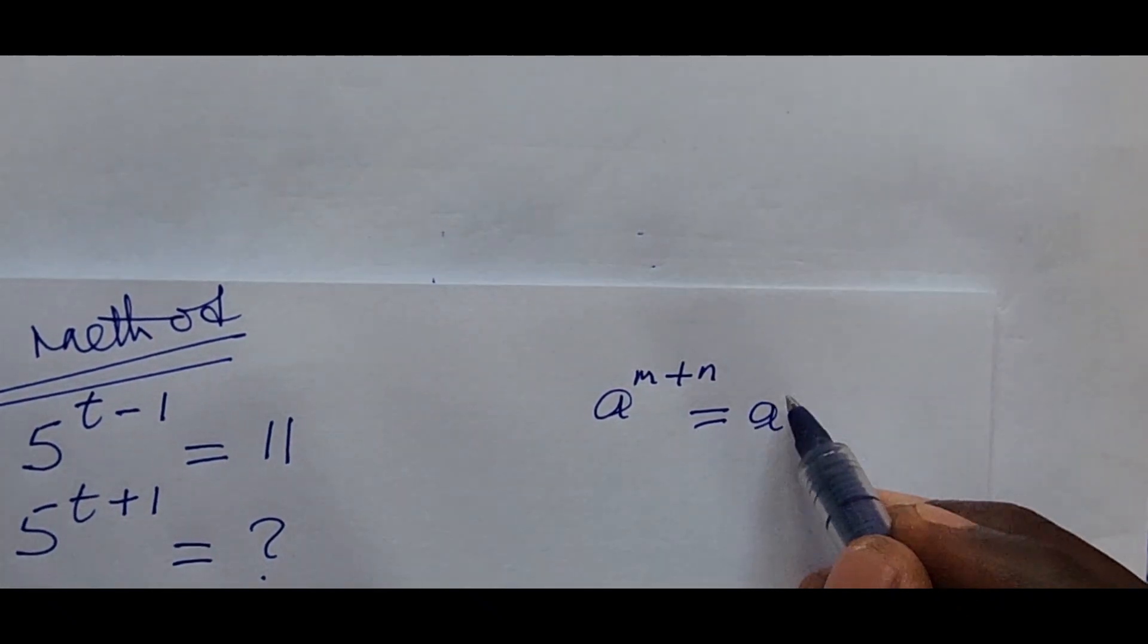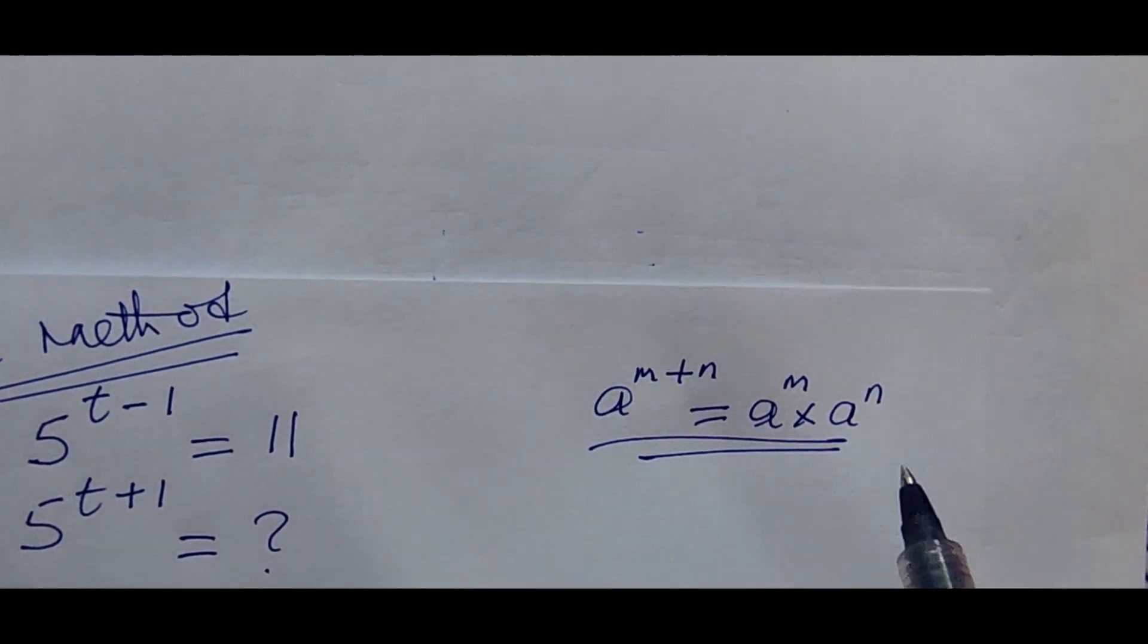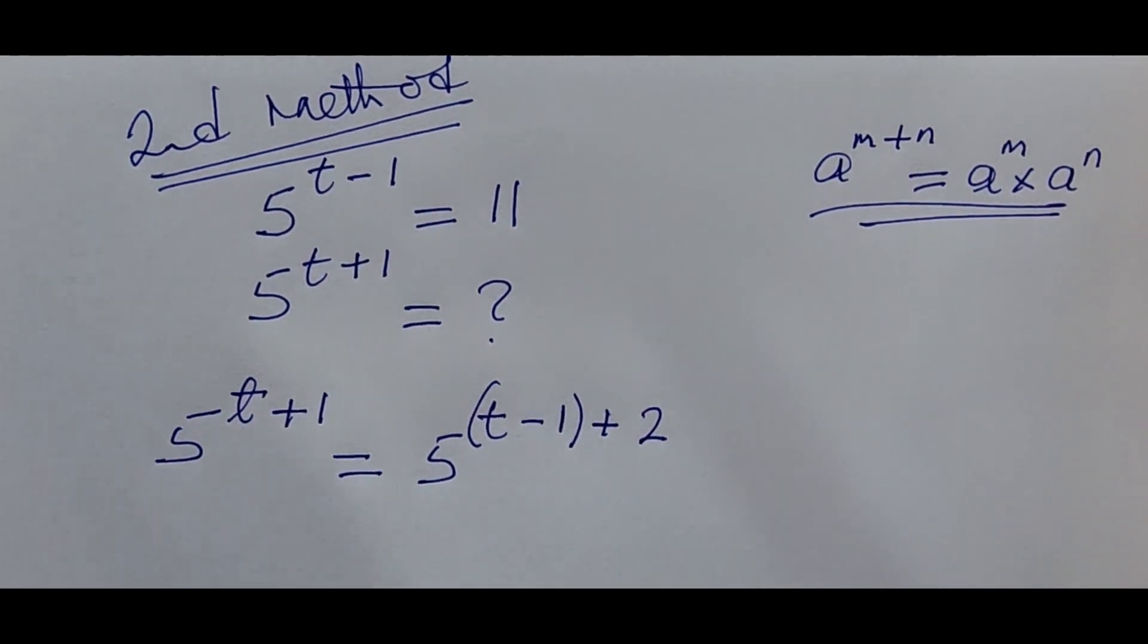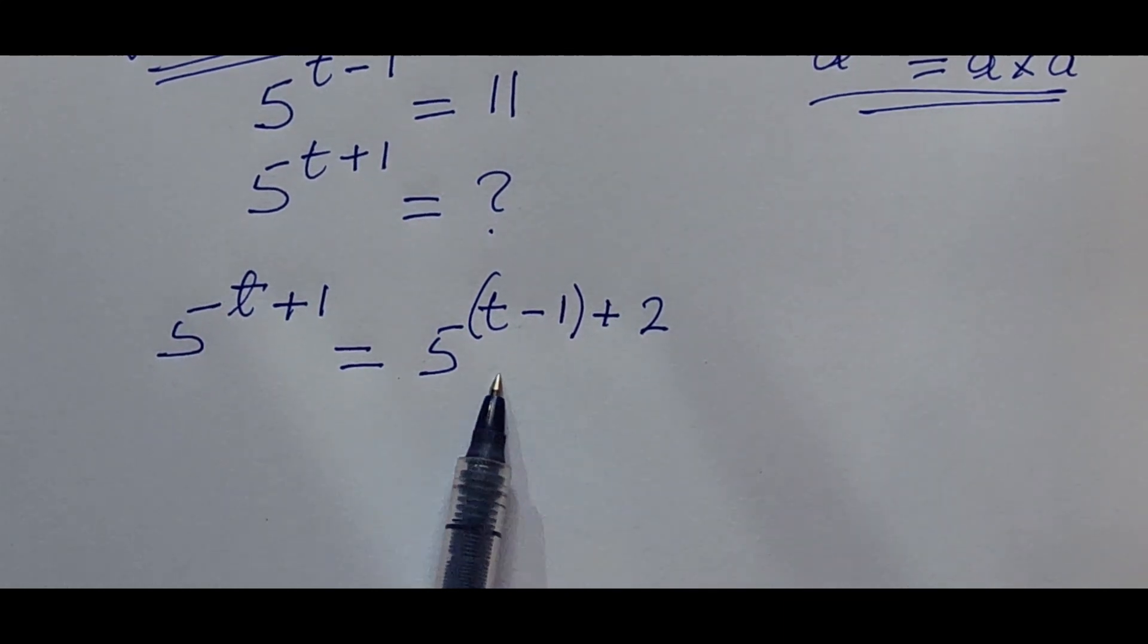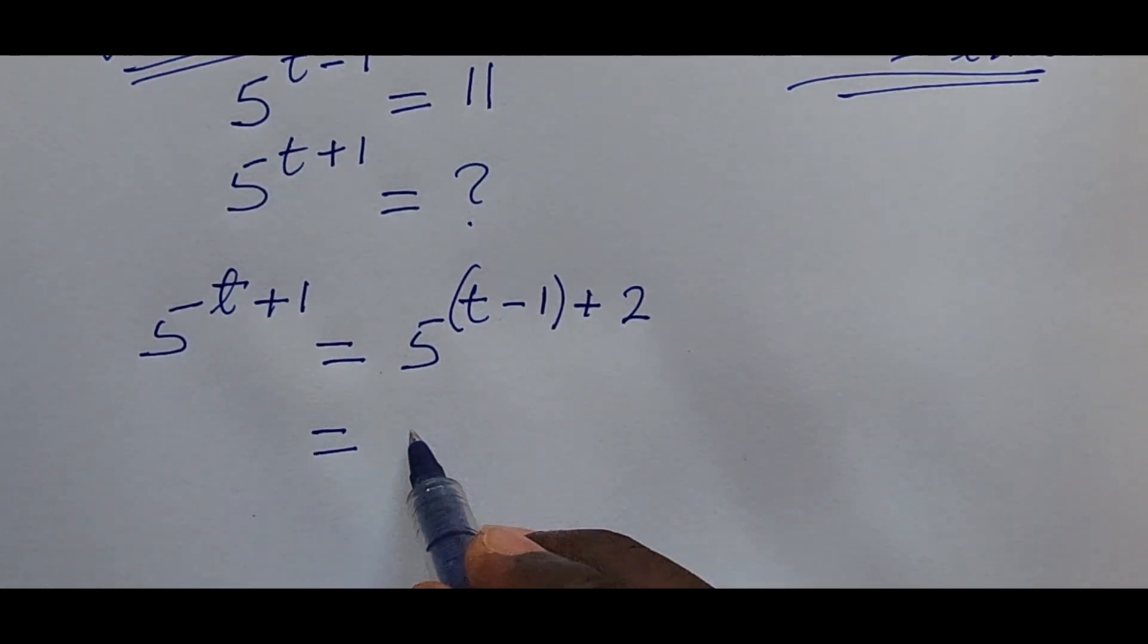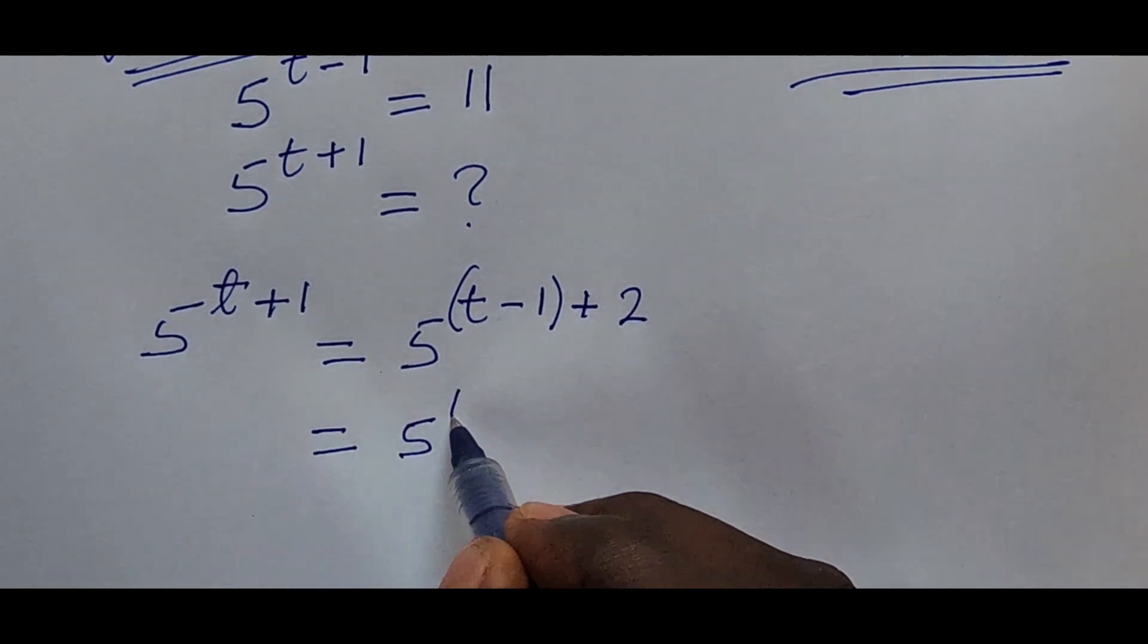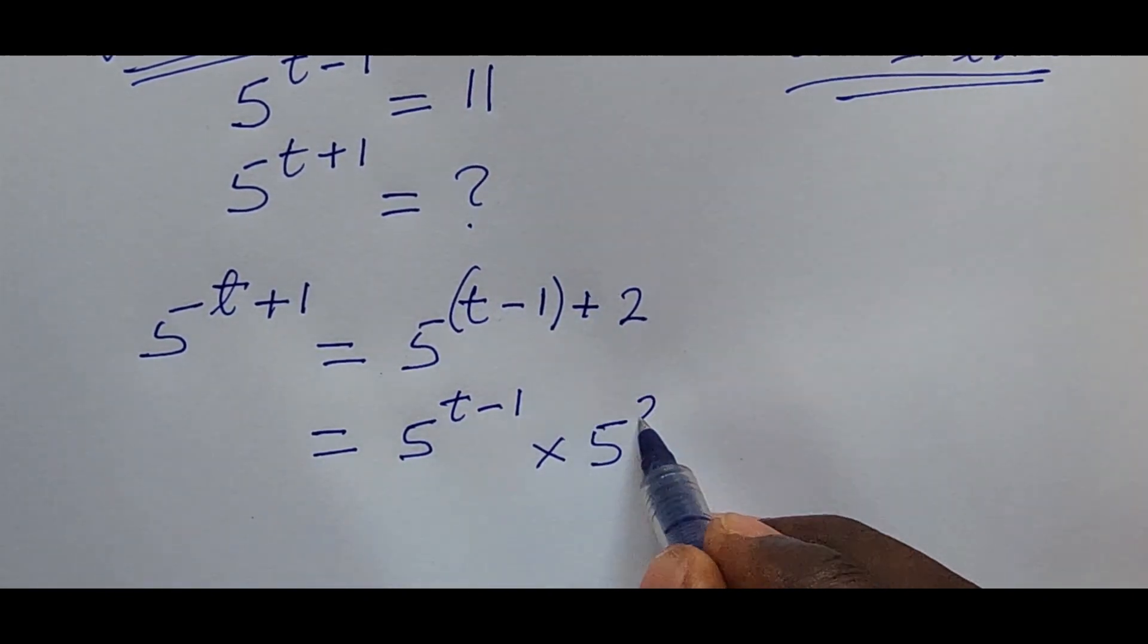You remember this law? Good. So we're going to apply this law at this place here. So I want to rewrite this expression. So this is supposed to be written as our 5 to the power of t minus 1 times 5 to the power of 2.